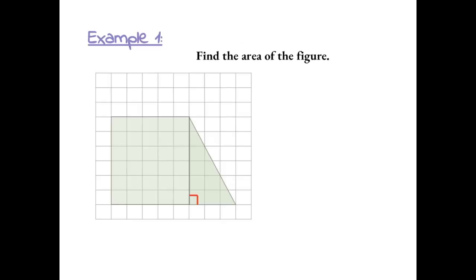Example 1, find the area of the figure. The entire shaded figure is made up of a square and a triangle. So we need to find the area of each separately and then add it together. First let's find the size of the base of the square.